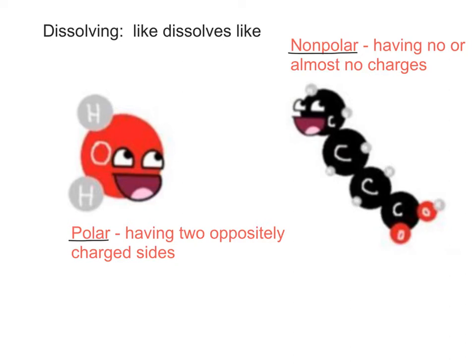The water molecule that you see here with this big happy face right here has very strong polar charges. The hydrogen atoms and the oxygen atom are sharing what we call electrons, which are where the charges in atoms really come from. And when they share them, they share them very unequally. You can think of the oxygen atom as being like a big hog that pulls all the negatively charged electrons towards itself.